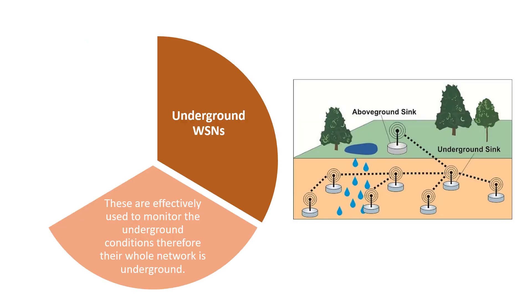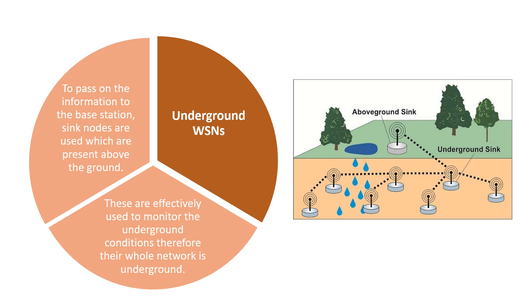The next type is the underground WSNs. These are effectively used to monitor the underground conditions, so their whole network is underground. But to pass the information to the base station, sink nodes are used which are present above the ground. A sink node is the node that collects all the information from all the sensors, and it has to be present above the ground to gather the data from the underground sensor nodes.